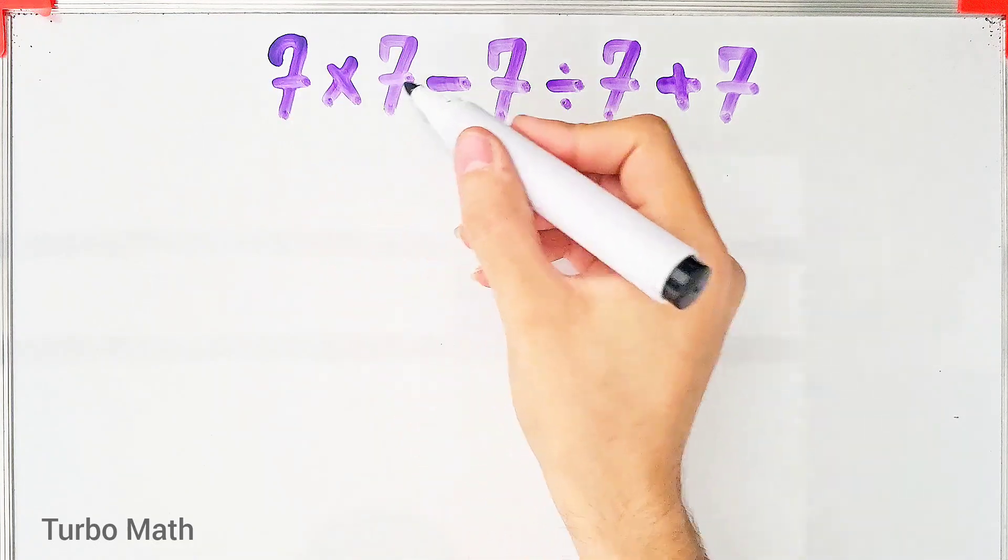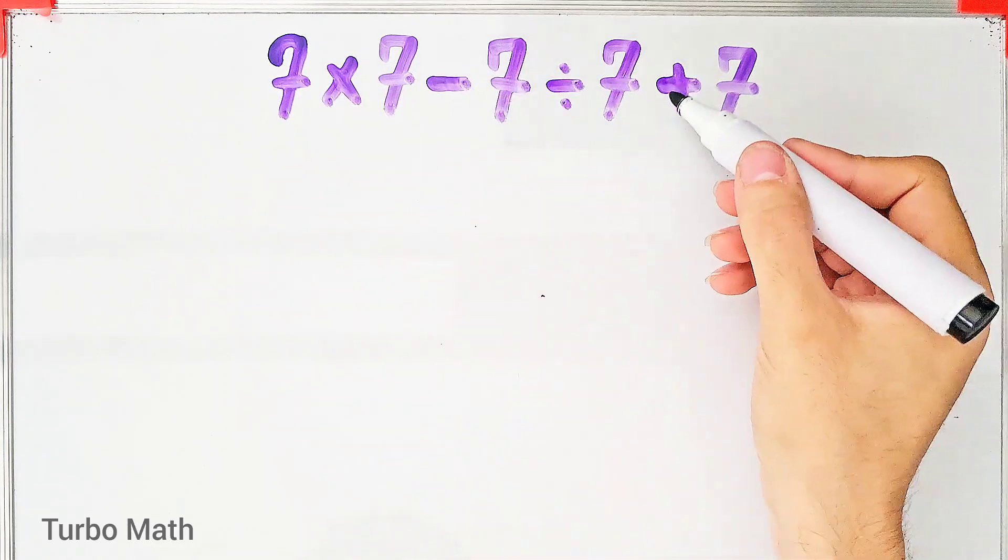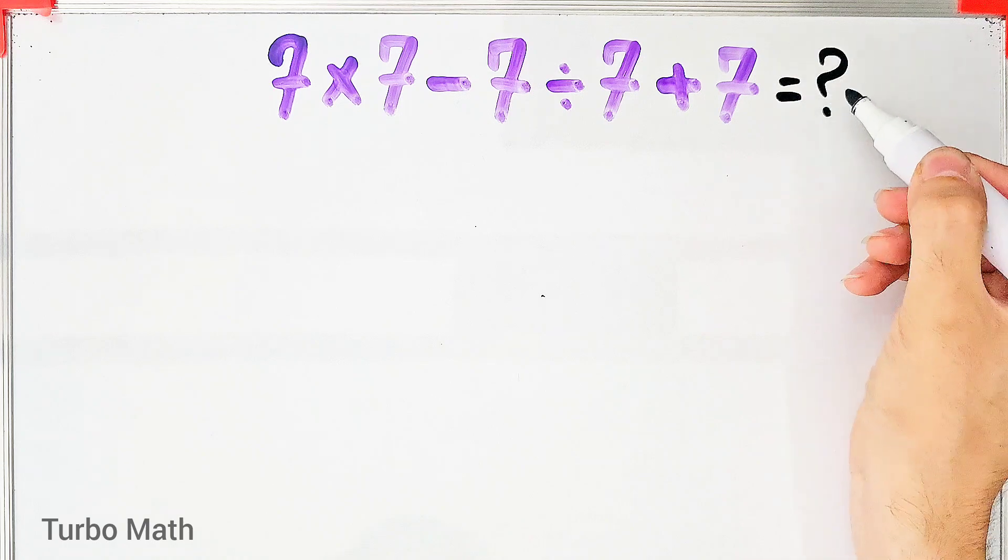7 times 7 minus 7 divided by 7 plus 7. What is the answer to this question? Can you solve it?